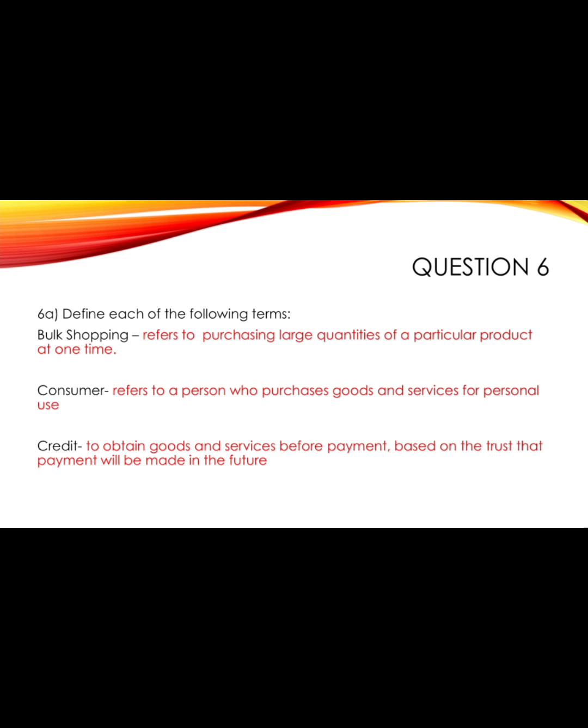Question six gives us three terms to define. Bulk shopping refers to purchasing large quantities of a particular product at one time. A consumer refers to a person who purchases goods and services for their own personal use. Credit means obtaining goods and services before payment, based on the trust that payment will be made in the future.